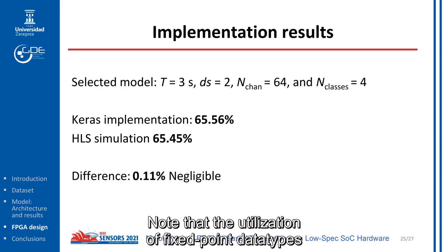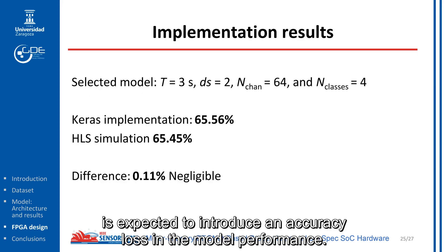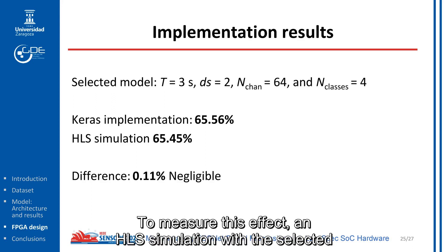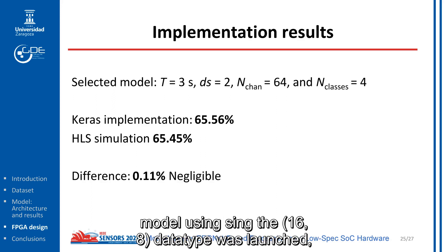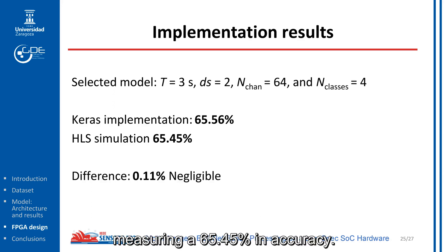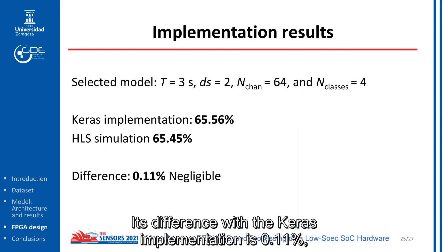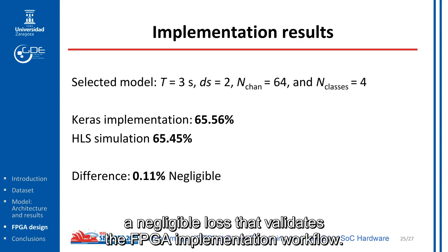Note that the use of fixed-point data types is expected to introduce an accuracy loss in the model's performance. To measure these effects, an HLS simulation with the selected model using the 16-8 data type was launched, measuring 65.45% in accuracy. Its difference with the Keras implementation is 0.11%, a negligible loss that validates the FPGA implementation workflow.